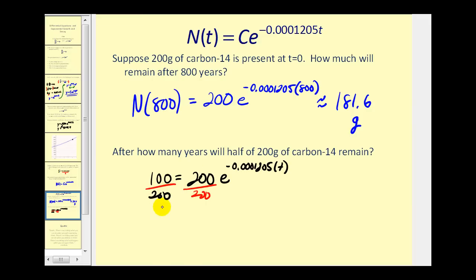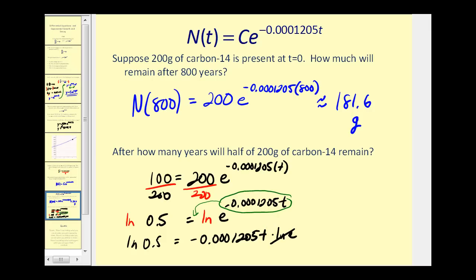So notice on the left side we have 0.5. That will always be true for half-life equals e to this exponent, and now to solve for t we'll have to take the natural log of both sides of the equation. Now we can apply the power property. We take this exponent and move it to the front. We're going to have natural log 0.5 equals negative 0.0001205t times natural log e, but natural log e is equal to 1. So the last step here is to divide by this coefficient.